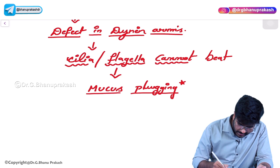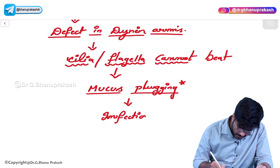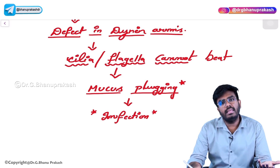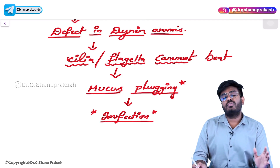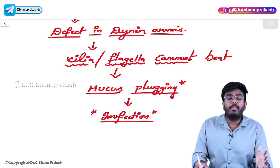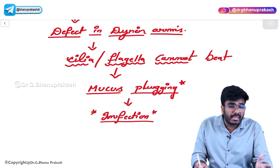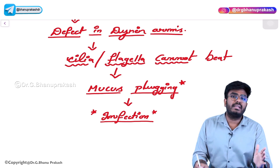This mucus plugging will cause infection. The mucus plug acts as an obstruction, and distal to the obstruction, infections will happen. So, Kartagener's syndrome is a condition where there is a defect in dynein arms leading to impairment of the mucociliary escalatory phenomenon, which causes mucus plugging and leads to infections in the respiratory tract.